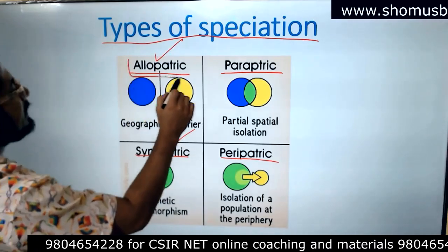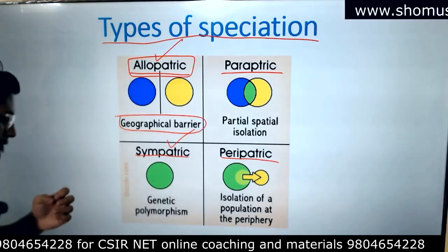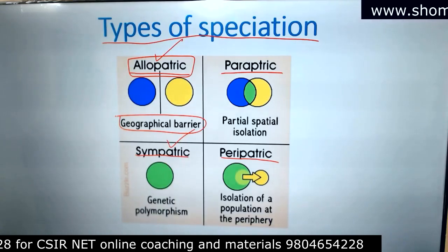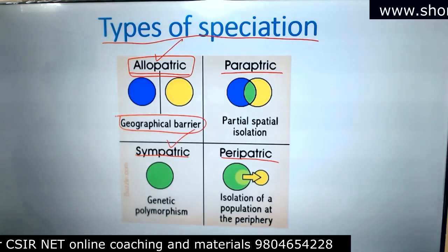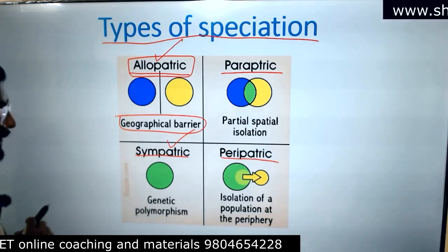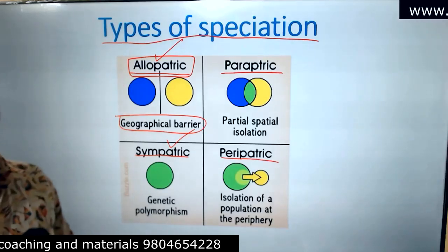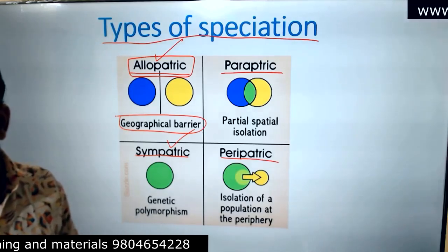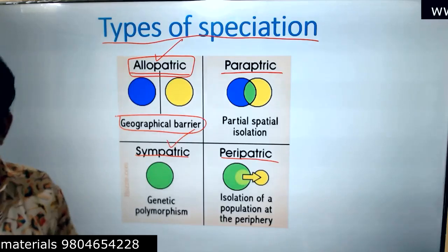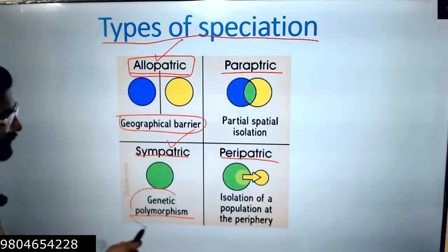Allopatric speciation is when speciation starts with a geographical barrier — a geographical barrier results in separation of organisms into different environments so that they can evolve differently. Sympatric speciation is when there is no geographical barrier; there is only a change in genetic frequencies or specific allele frequencies in a population. Change in allele frequency — modification of an organism while staying in the same environment — is known as genetic polymorphism.